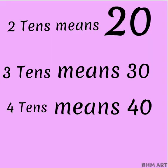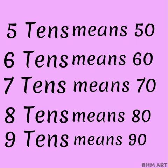2-10s means 20, 3-10s means 30, and 4-10s means 40. 5-10s means 50, 6-10s means 60, 7-10s means 70, 8-10s means 80, and 9-10s means 90.